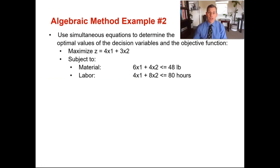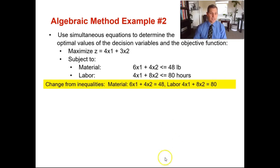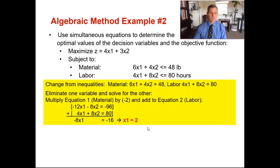Now let's do our second example of the algebraic method. The objective function is maximizing Z equals 4x1 plus 3x2. The constraints are: material — 6x1 plus 4x2 is less than or equal to 48 pounds — and labor — 4x1 plus 8x2 is less than or equal to 80 hours. We're going to solve this algebraically just like Glickman Electronics. Step one: change the inequalities into equalities, making it equals 48 and equals 80.